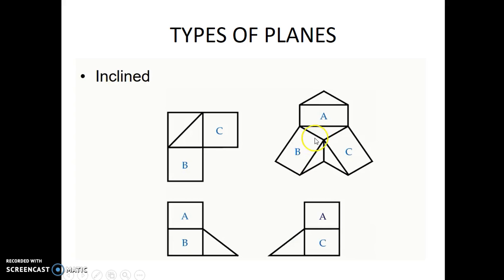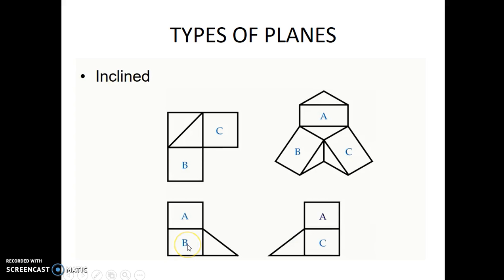Unlike that, here in this object we have surfaces B, C, and A inclined to the projection planes. If we view in this direction — the front side of the object — then surface B is inclined to the frontal plane as well as the horizontal plane. Similarly, surface C is inclined to the profile plane as well as the horizontal plane. In the three views — the front view, top view, and the side view — we see the foreshortened view of surface B in the top view and another foreshortened view of surface B in the front view. Similarly for surfaces C and A.